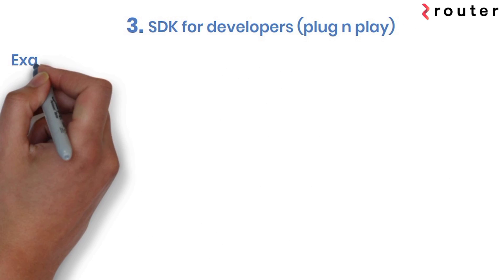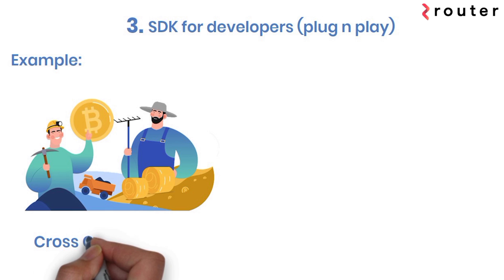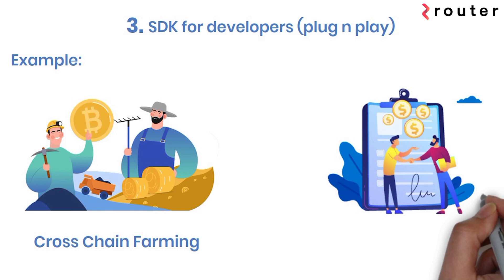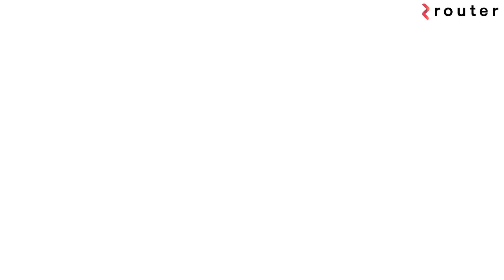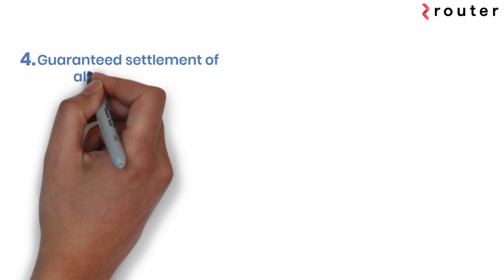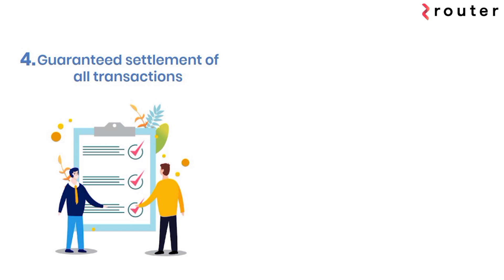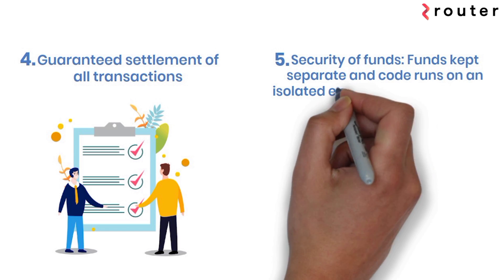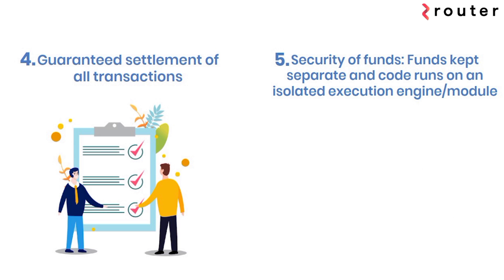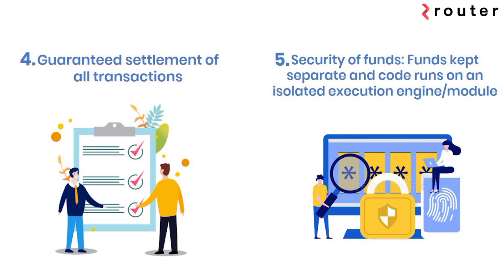With Router's SDK launching in a couple of months, developers will no longer need to build cross-chain applications from scratch. Router Protocol ensures that users' funds are never blocked even during times of low liquidity on the bridge. By having a separate contract to handle execution and a separate contract to handle the funds, Router ensures utmost security of user funds.